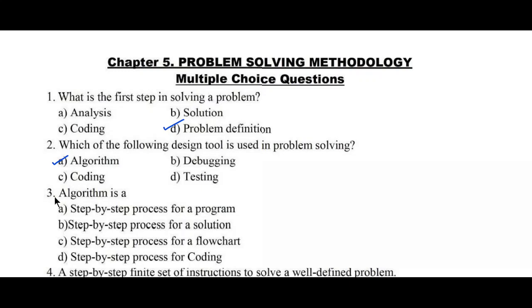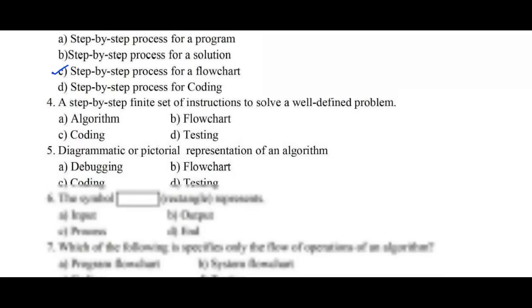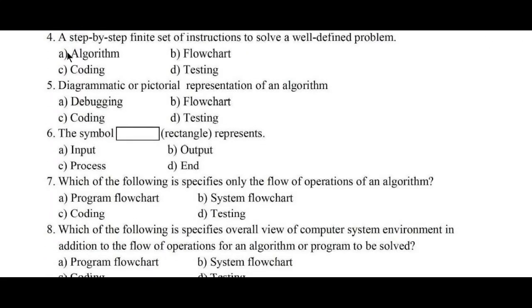Question number 3: Algorithm is — A. Step-by-step process for a program, B. Step-by-step process for a solution, C. Step-by-step process for a flowchart, D. Step-by-step process for coding. Here option B, step-by-step process for a solution, is the right answer.